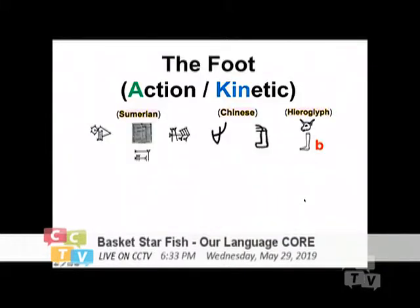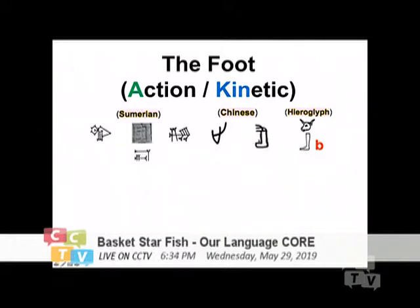I will begin — before I go back to my head part — by giving you a brief explanation about the foot. The foot since ancient times: these three are Sumerian, this is Chinese, and as you can see, one of the Chinese writings is very similar to the Sumerian already. And then this is a hieroglyph. Since thousands of years ago, they were already trying to express the foot with a kind of horn head — a foot that has some kind of energy that moves it. If you put the hieroglyph together, the foot will be the representation of the alphabet B.